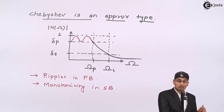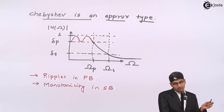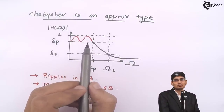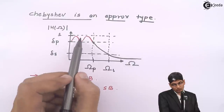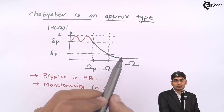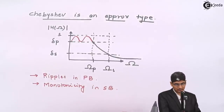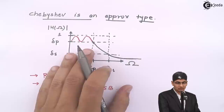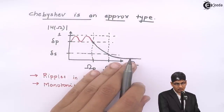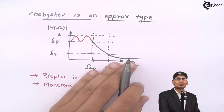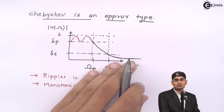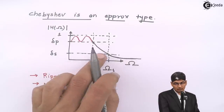Comparing Butterworth with Chebyshev: Butterworth has a flat, monotonous response in both the passband and stopband. In Chebyshev we have ripples in the passband and no ripples in the stopband. So why should one choose Chebyshev? The advantage of Chebyshev approximation is that it gives a very good roll-off rate.